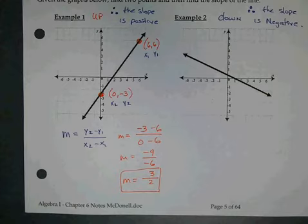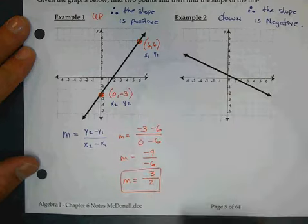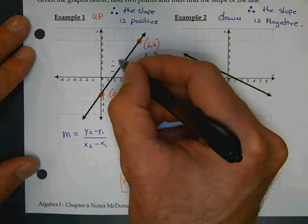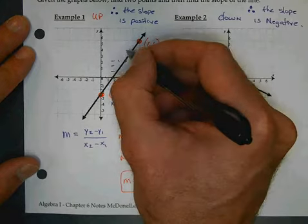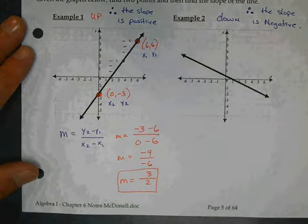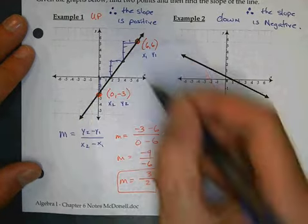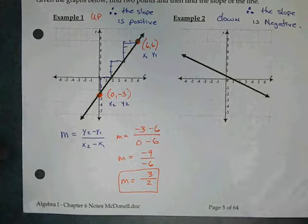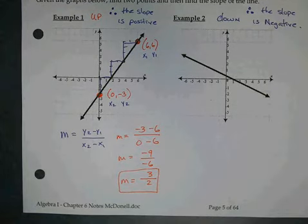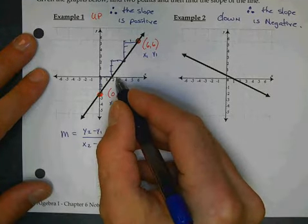Now what does 3 over 2 mean? It means from this first point down here, if I go up 3 and over 2, I get to that spot. Then if I go up 3 more and over 2, I get to that spot. And up 3 more and over 2, I get to that spot. The slope is the rise over the run. So if you think about this, we have these little triangles, and each of these triangles has what dimensions? Up 3 over 2. Up 3 over 2. Up 3 over 2. Now which way did I run? Did I run to the right or did I run to the left? I always run to the right. You rise and then you run. That's why it's called rise over run.